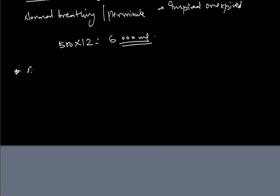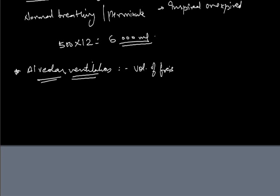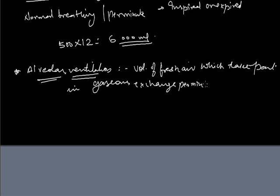Alveolar ventilation is the volume of fresh air that takes part in gaseous exchange per minute. Unlike minute respiratory volume which includes all air, alveolar ventilation counts only fresh air participating in gaseous exchange — 350 ml multiplied by 12, giving approximately 4200 ml per minute.